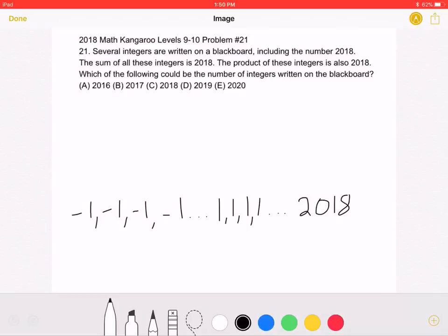Since the product of these numbers is 2018, and 2018 is one of those numbers, the other numbers must be negative 1 and 1 in order for them to have a product of 2018. We need to figure out how many negative 1s we have, and how many 1s we have.